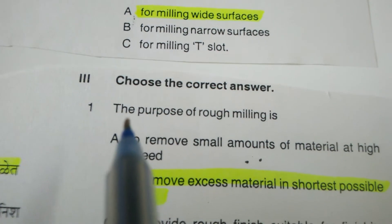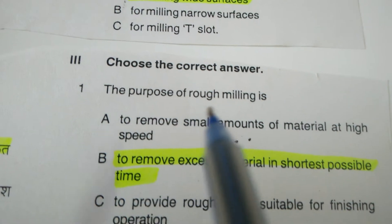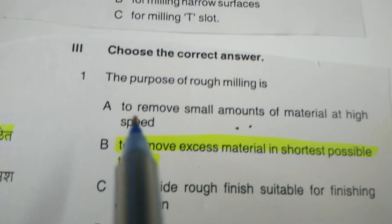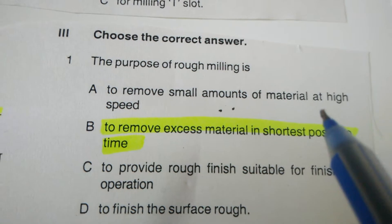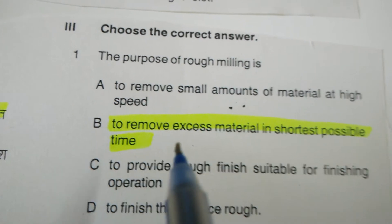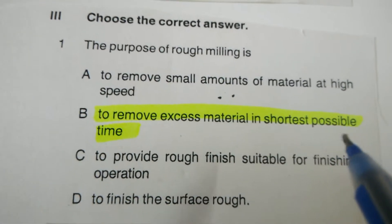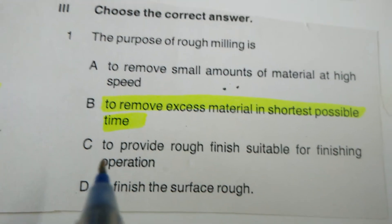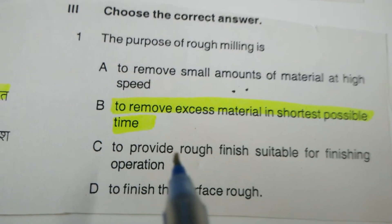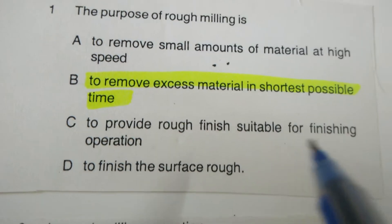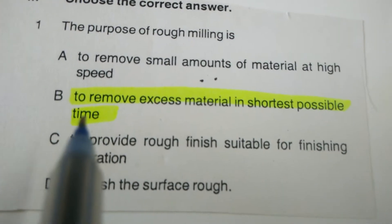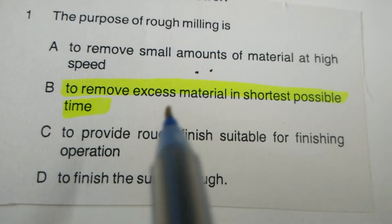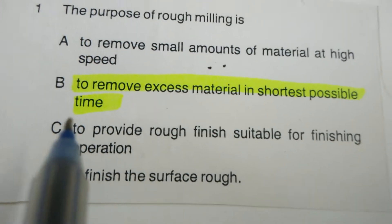Next question: The purpose of rough milling is — to remove a small amount of material at high speed, to remove excess material in the shortest possible time, to provide a rough finish suitable for finishing operation, or to finish the surface roughness? The correct answer is to remove excess material in the shortest possible time.